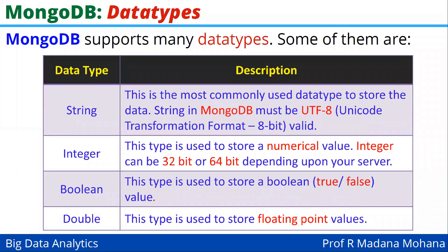The following table shows some of the frequently used data types available in MongoDB. The first one is string. This is the most commonly used data type to store data. String in MongoDB must be in the UTF-8 format, where UTF means Unicode Transformation Format and 8 means 8-bit, which is a UTF-8 valid format.